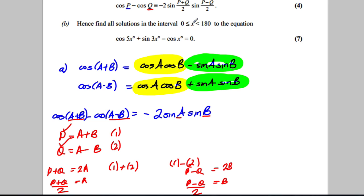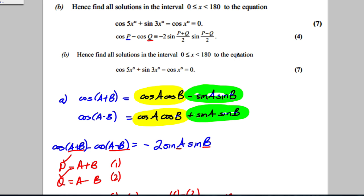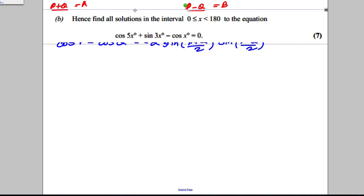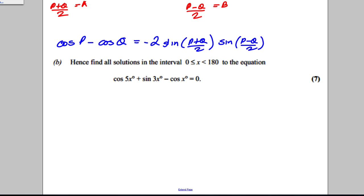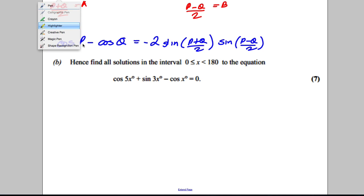Then it says hence find all the solutions between 0 and 180 to the following equation. So I'm just gonna move down here. Hence, so use hence. Now I look at this and I see cos 5x + sin 3x - cos x.